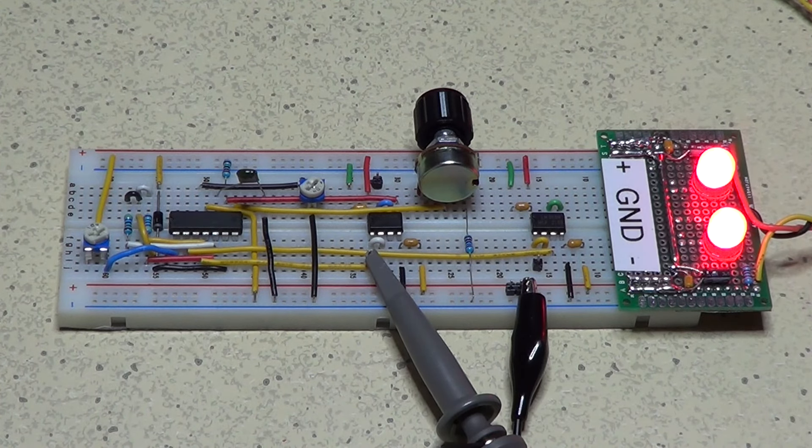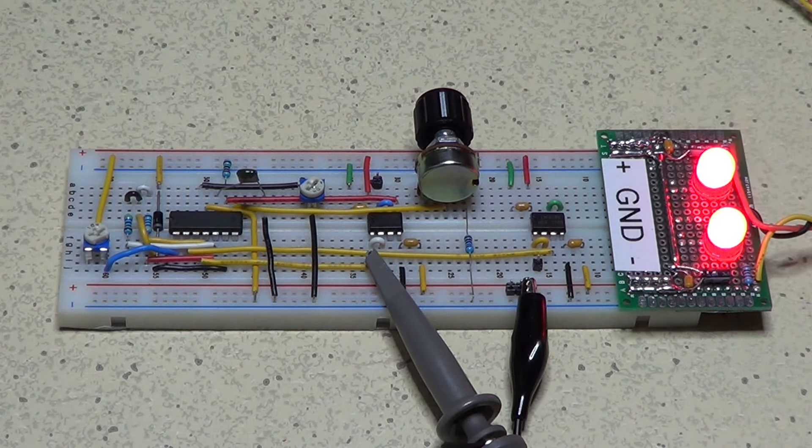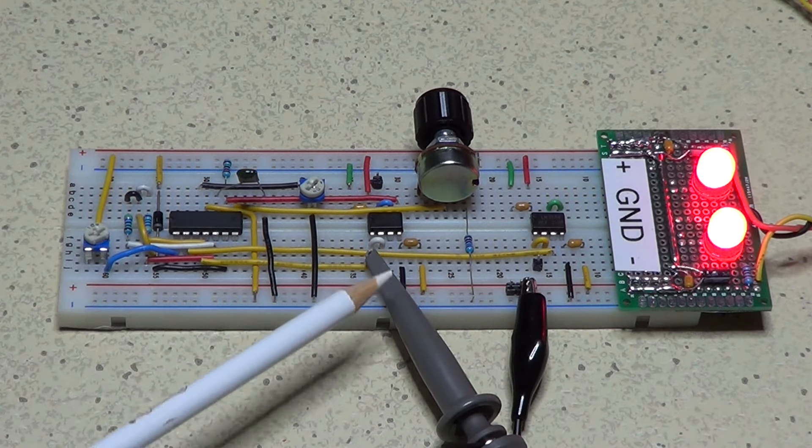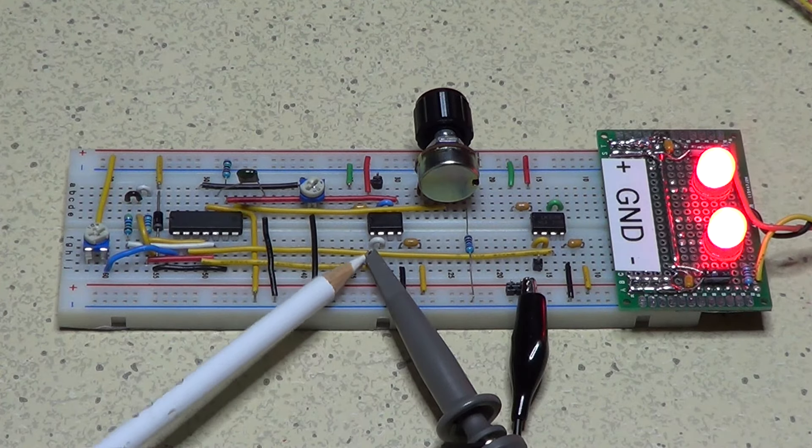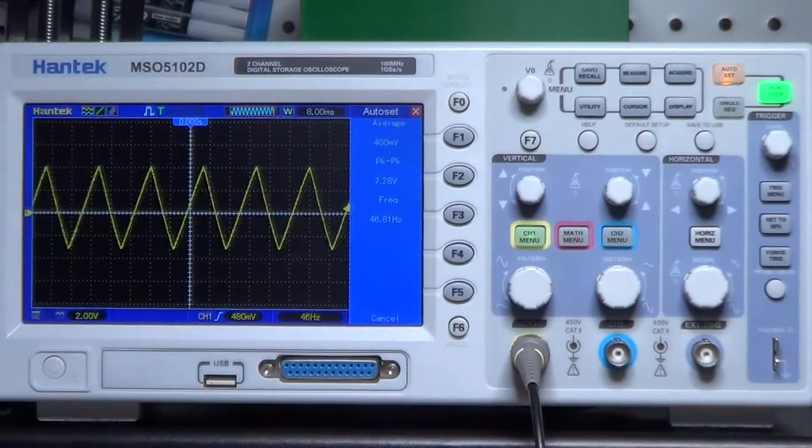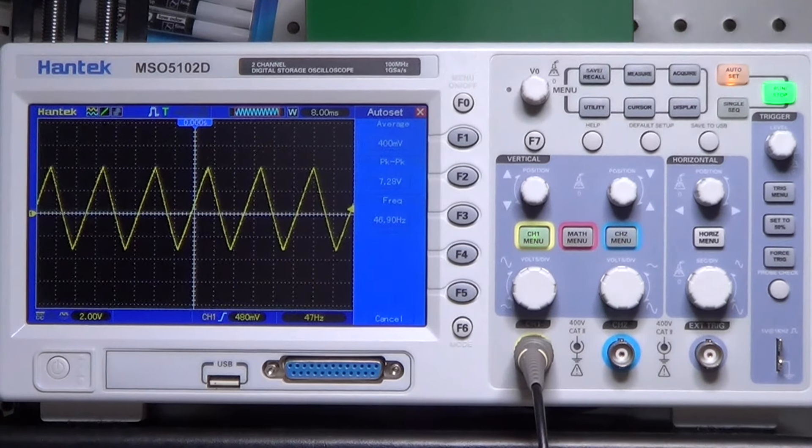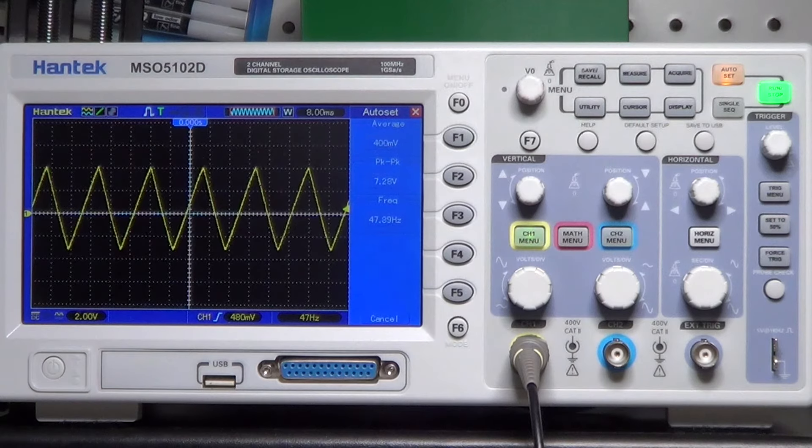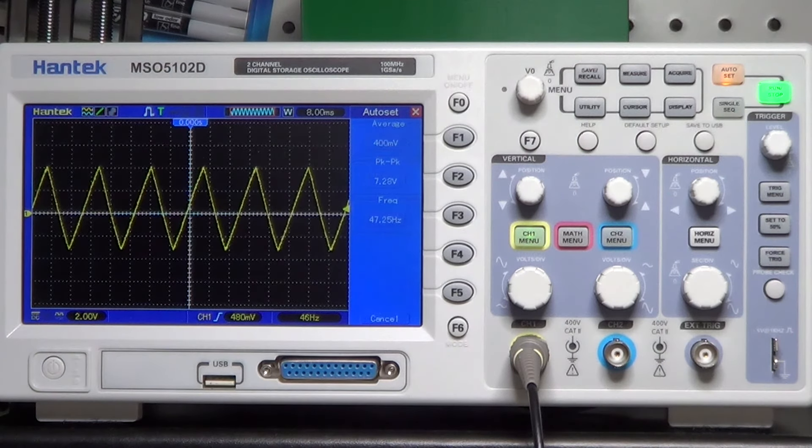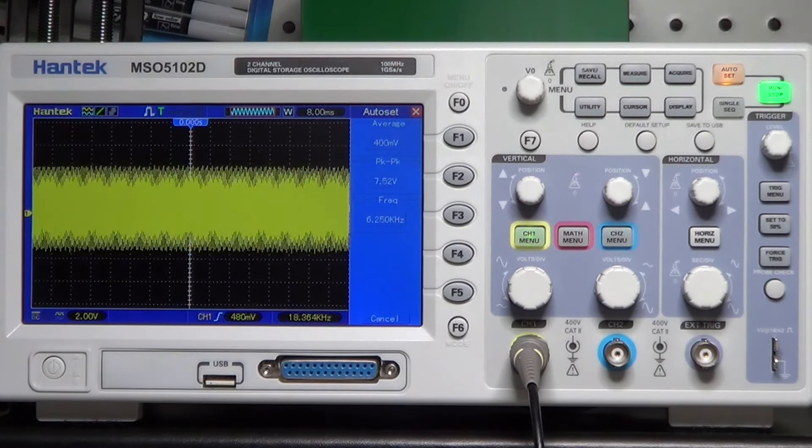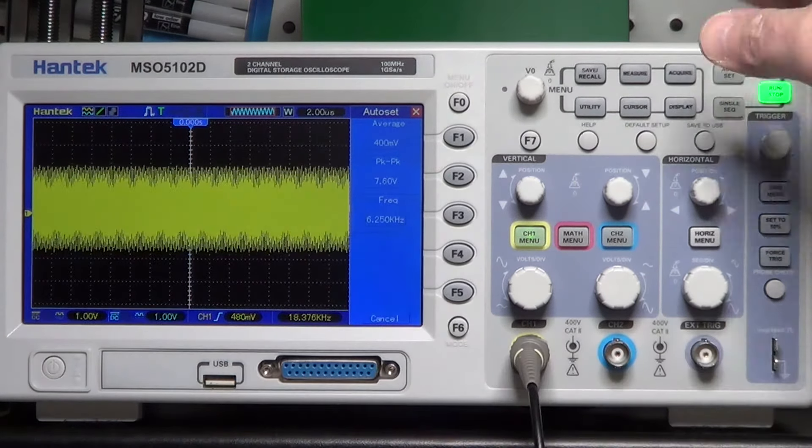The circuit is now powered up, as we can see from the two LEDs on the voltage distribution board. And I already connected the oscilloscope probe to the first of the three outputs, the triangular wave, which we can now see on the oscilloscope. Now, if we manipulate the potentiometer, we can change the frequency of the triangular wave. Right now, it is oscillating at about 47 Hz. And if we rotate the potentiometer all the way, the frequency goes up to about 18 kHz.